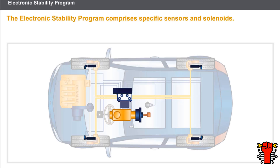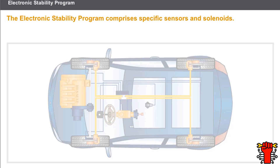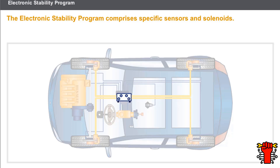The electronic stability program comprises the elements that are common to the ABS system, plus the following additional elements: the steering wheel angle sensor, a combination of a transverse accelerometer and a yaw speed sensor, solenoid valves that are specific to the function, and a deactivation switch located on the dashboard.